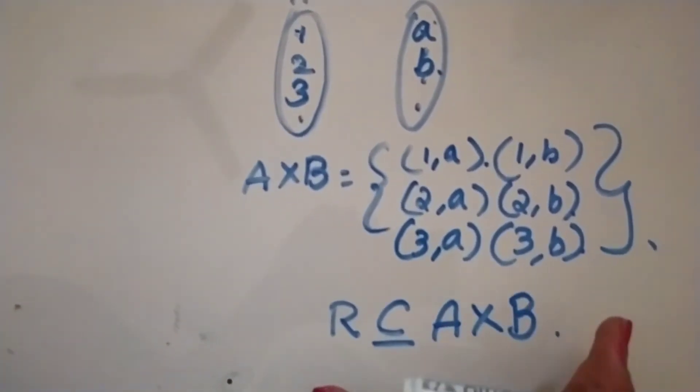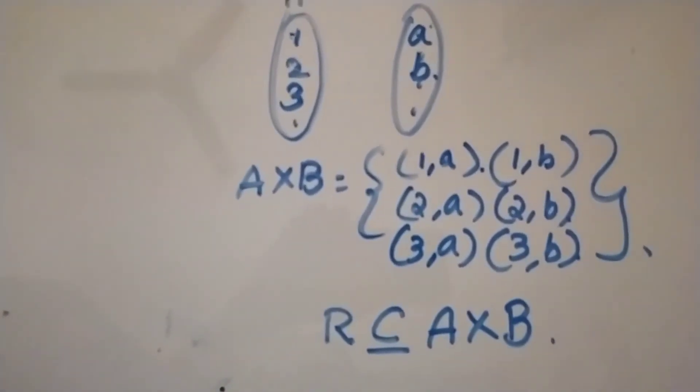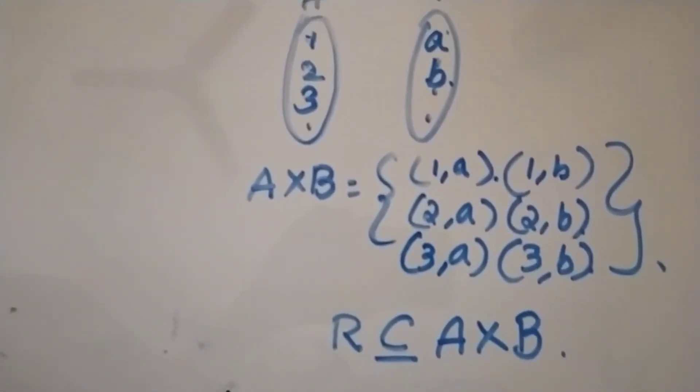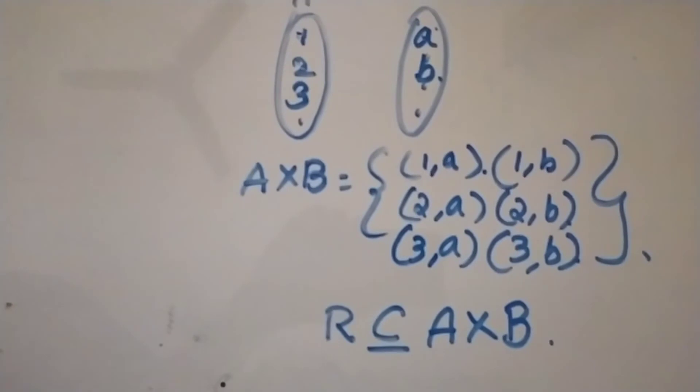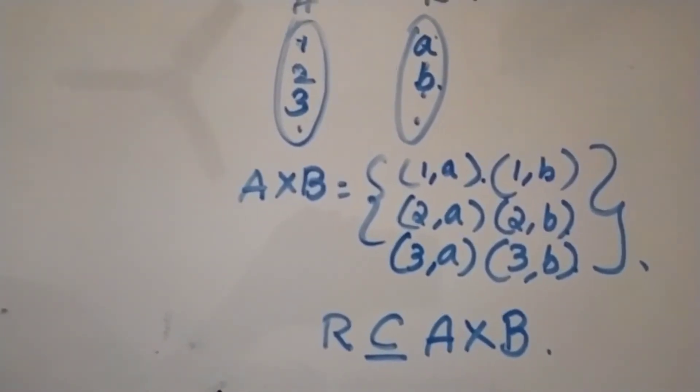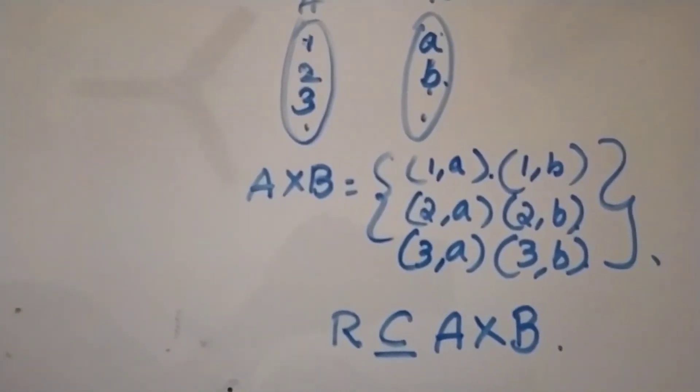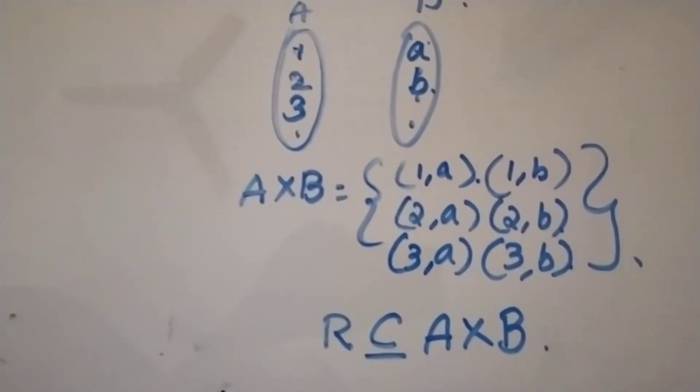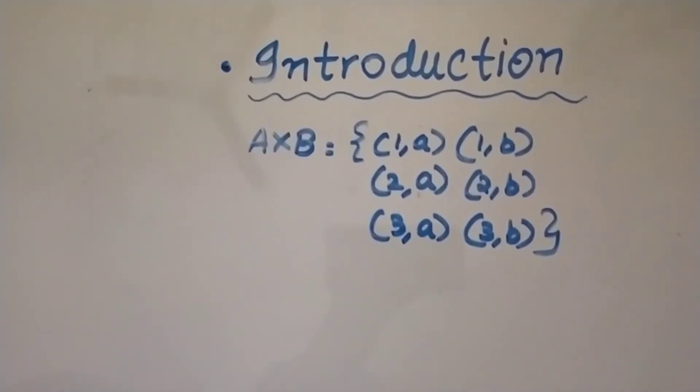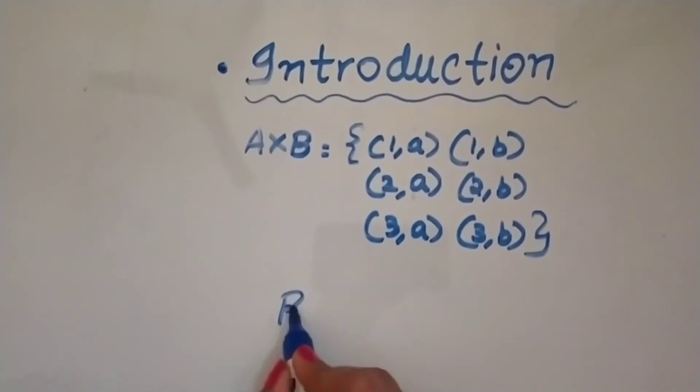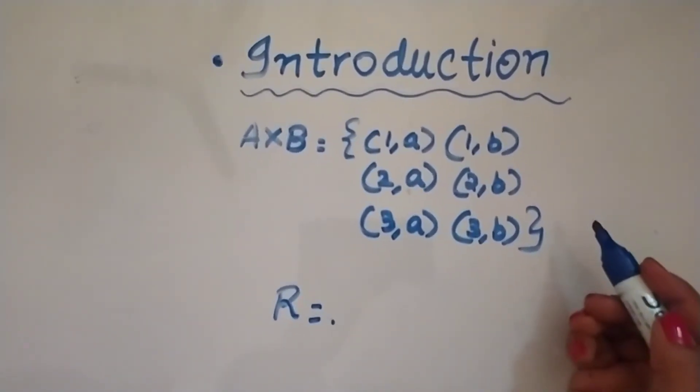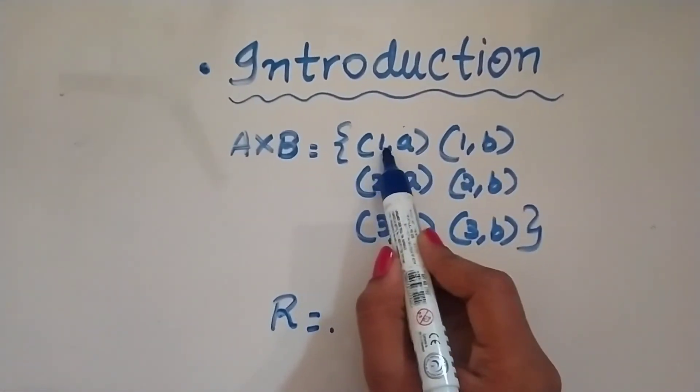So it is a part or subset of A cross B. If I have to write the relation, for example I take pairs with odd numbers. So if I have to write the relation for pairs with odd numbers, the relation will be - I have to just write the odd numbers, right? The first element should be odd numbers.